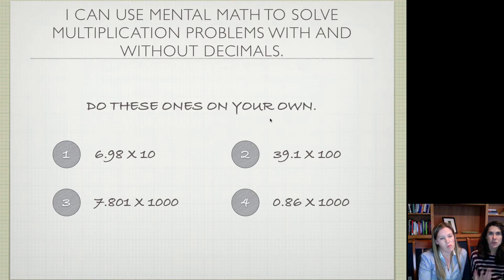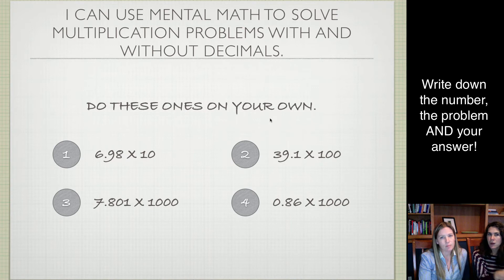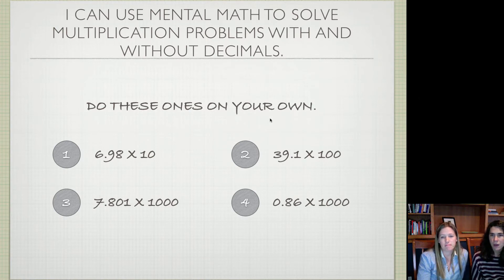Since we're just practicing that idea of decimals, we don't have any where you pause and try. These are just right on your own, right away. If you need to review, go back and review. And then take a moment to try to solve these four problems, thinking about that idea. Write the equation out again so we can go over it in groups, and you know exactly what problem we're talking about. Come on back when you're done.